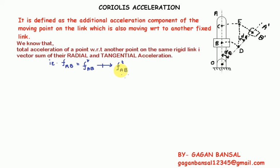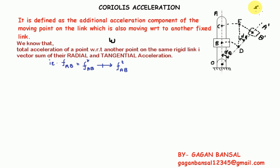Now, to find the magnitude of the Coriolis component, let link OA move to a new position OA dash as shown by the dotted lines, with uniform angular velocity omega radians per second in a very small time interval delta t.